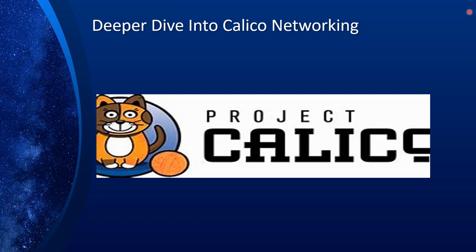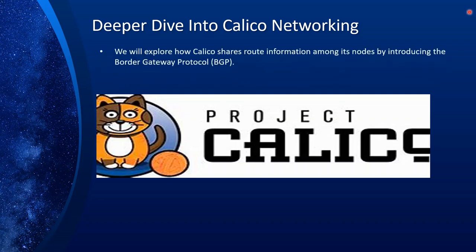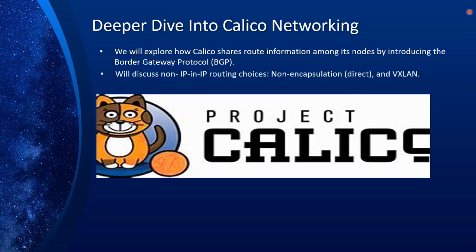Hopefully by now you have some understanding of how CNI providers work and how Calico works using default settings. But there is a lot more to Calico. I'm going to talk about a couple more things. First, we'll explore how Calico shares route information among its nodes — using the protocol called Border Gateway Protocol or BGP. That is something Calico leverages to share routing information between nodes. Following that, we will discuss non-IP-in-IP routing. IP-in-IP is the default mode, and if you don't make any changes to Calico's settings when installing, it uses IP-in-IP by default.